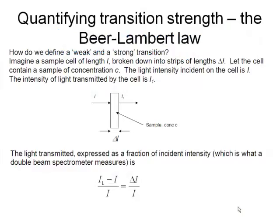We need some way of quantitatively assessing the strength of a transition. What is the intensity of the electronic absorption? We do that with something called the Beer-Lambert law.